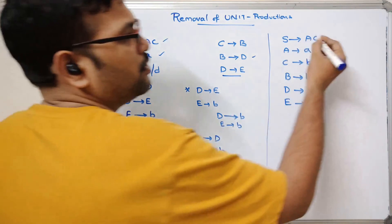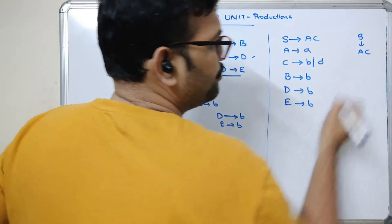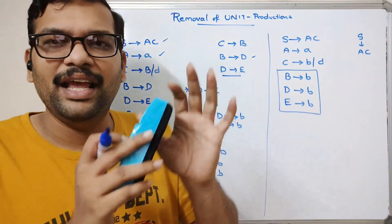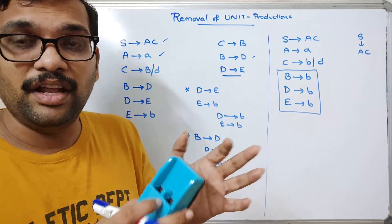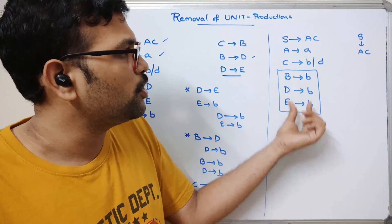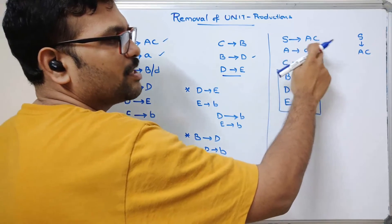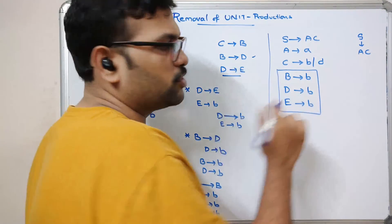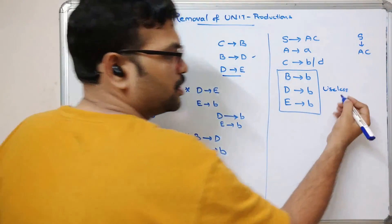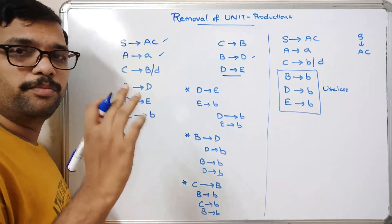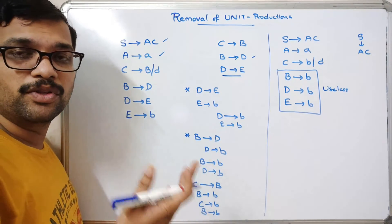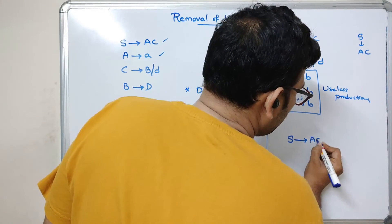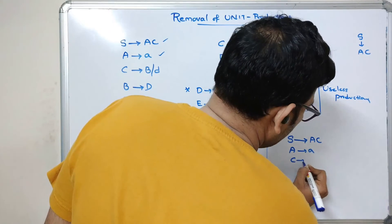However, observe that S is the start symbol and from S we can only have AC. So productions like B→b, D→b, and E→b will never be used in any derivation of any string — these are useless productions, which we already covered in a previous session. A link is posted in the description. So removing those useless productions, the final simplified CFG is: S→AC, A→a, and C→b or d.